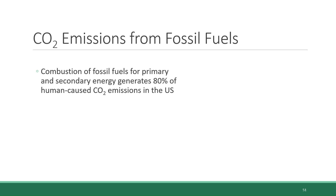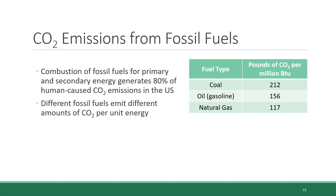It's also important to note that the three different fossil fuels are not equal in terms of CO2 emissions per unit energy generated. This table shows the three fossil fuel types and the pounds of CO2 released per unit of energy — in this case, per million BTUs (British Thermal Units). The combustion of enough coal to generate a million BTUs produces 212 pounds of CO2. Gasoline produces only 156 pounds, and natural gas is even lower at 117 pounds of CO2 per million BTUs.